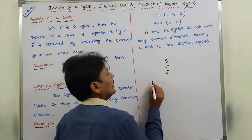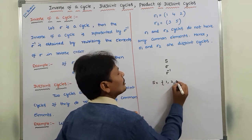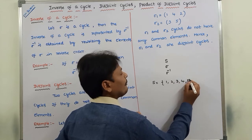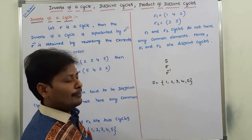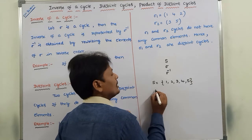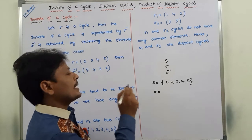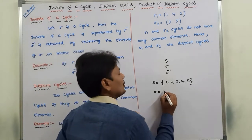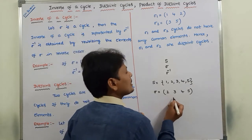Consider the example. Let S = {1, 2, 3, 4, 5}, so S is a finite set that contains 5 elements. Sigma is a cyclic permutation defined on the elements of set S, that is sigma = (2, 3, 4, 5). Here 2's image is 3, 3's image is 4, 4's image is 5, 5's image is 2, so we can say that it is a cyclic permutation.